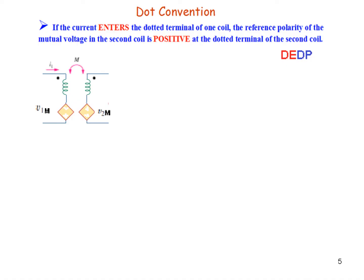To determine polarity we follow the dot convention. If current enters the dotted terminal of one coil, the reference polarity of the mutual voltage in the second coil is positive at the dotted terminal. Since the dot is on the upper part, the positive voltage sign is at the upper part of that diamond source.